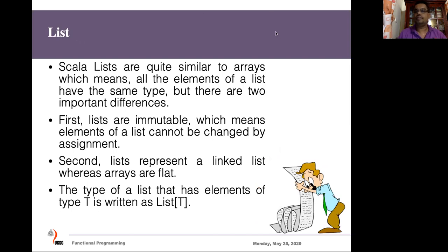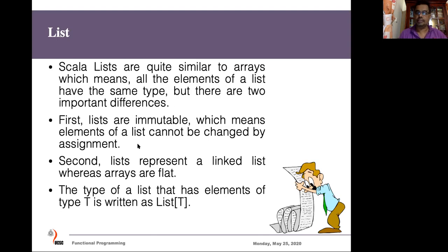Now let's see another collection type — that is List. In the Scala programming language, a list is basically immutable. Immutable means after you create a list you cannot change the values; you can access them but cannot change them. Lists are quite similar to arrays, and the elements of the list also have the same type. The important differences are: first, lists are immutable; second, a list represents a linked list data structure, whereas an array is flat.